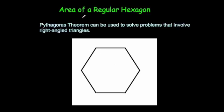In this video, we're going to look at how to find the area of a regular hexagon. To find the area of a regular hexagon, you cut it into triangles. You find the area of one of the triangles, and you times it by 6. Let's have a look at an example.